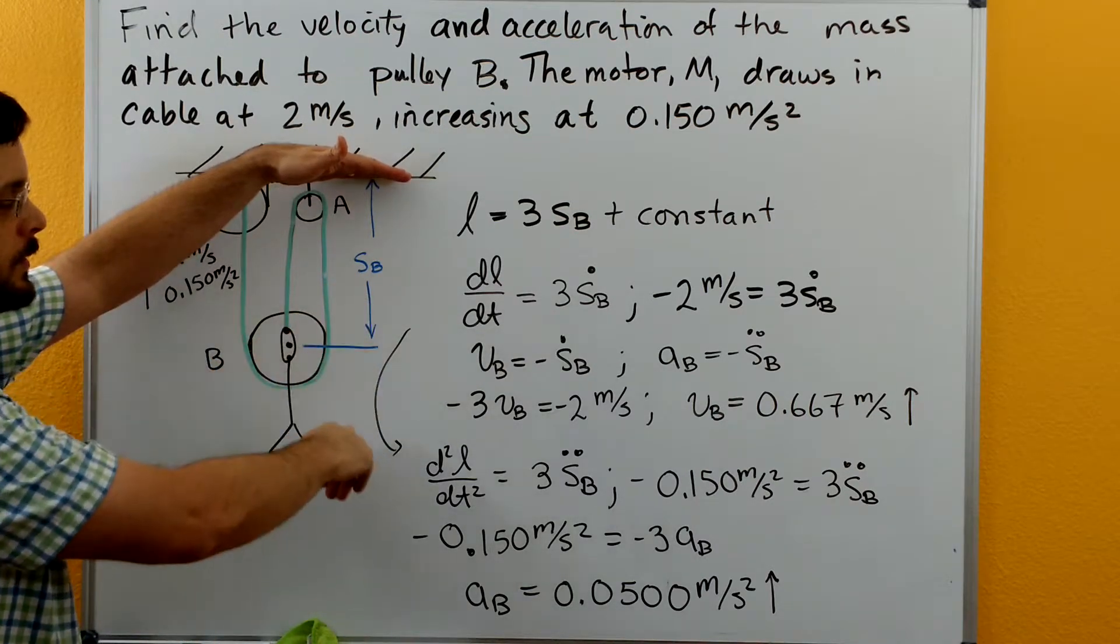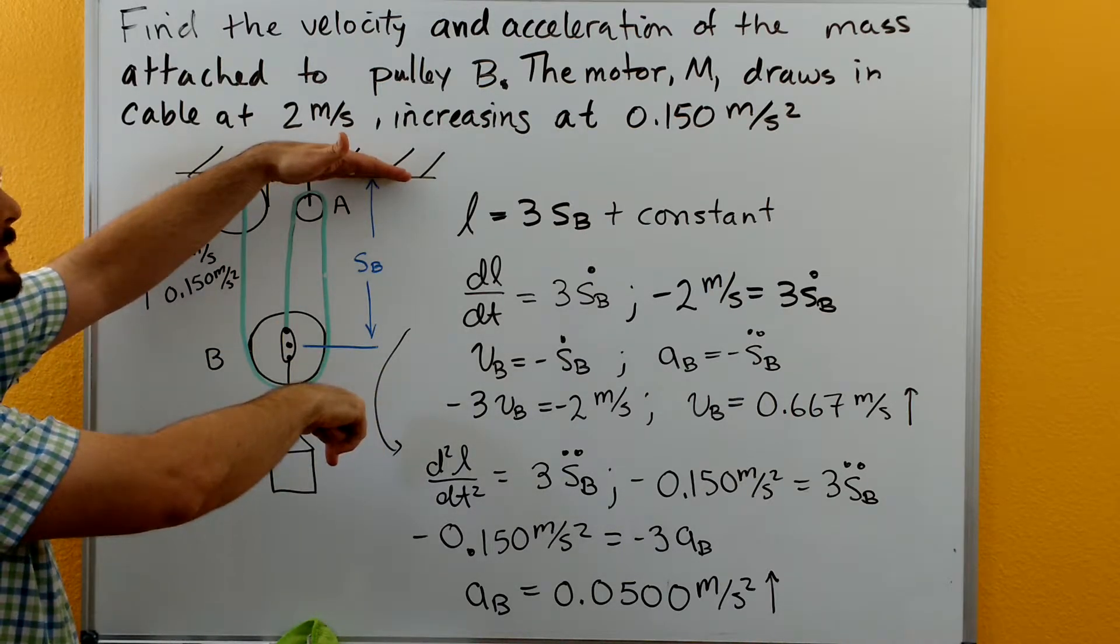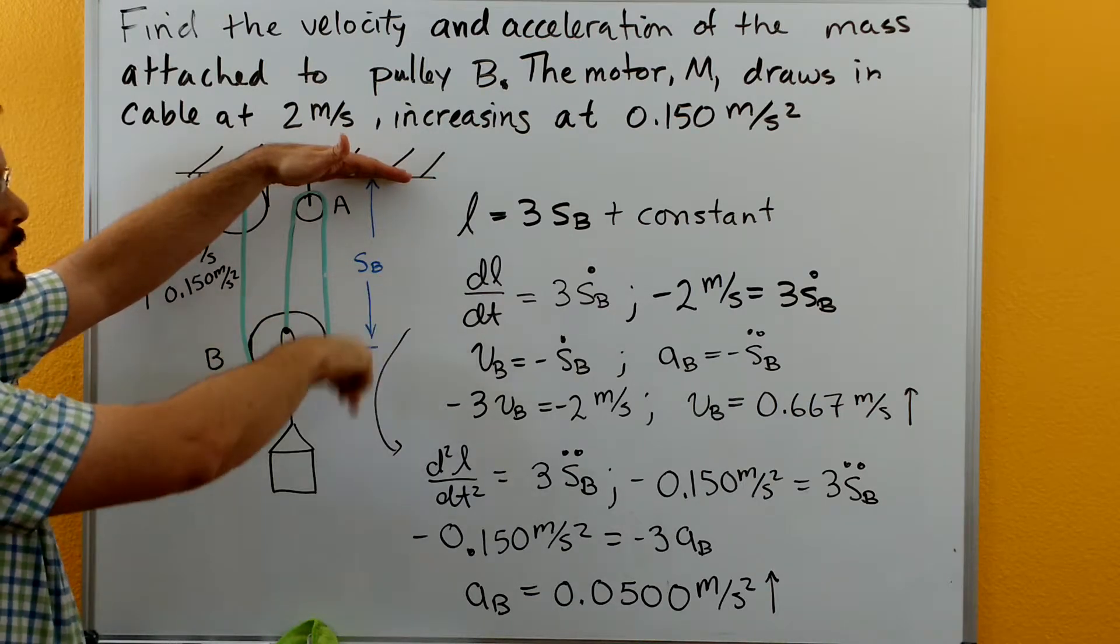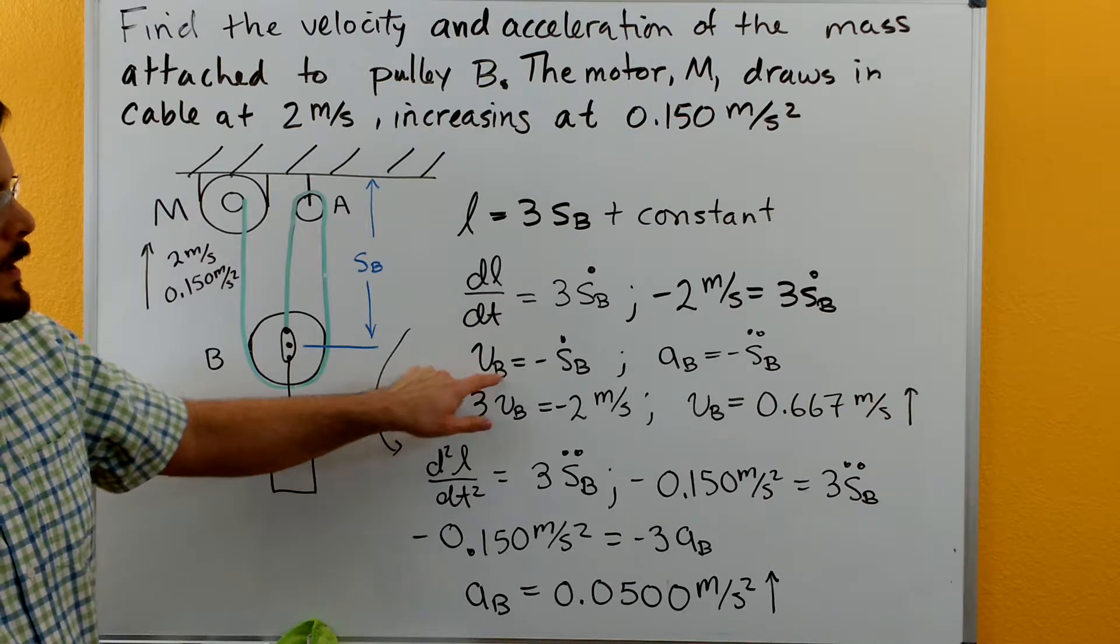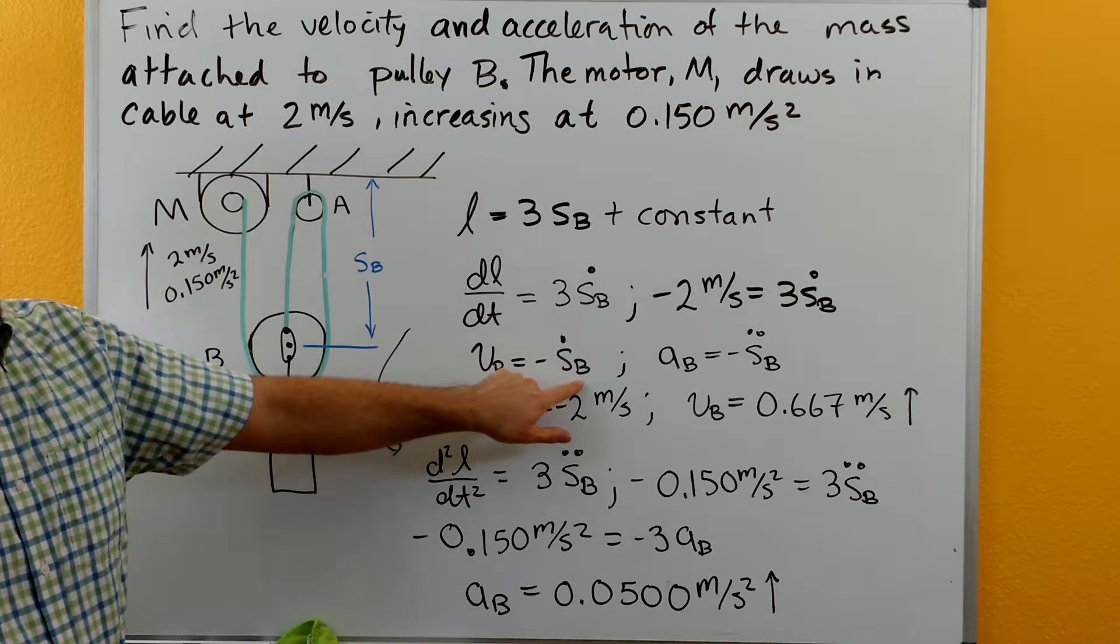If SB is increasing, we're going to be moving down. So that says that while dSB/dt is positive, the velocity of B would be negative. So the velocity of B must be equal to the negative of whatever the SB dot term is.